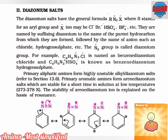They are named by suffixing 'diazonium' to the name of the parent hydrocarbon from which they are formed, followed by the name of the anion such as chloride, hydrogen sulfate, etc. The N2+ group is called the diazonium group. For example, C6H5N2+Cl- is named benzene diazonium chloride, and C6H5N2+HSO4- is known as benzene diazonium hydrogen sulfate.